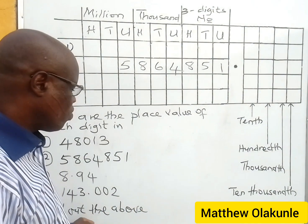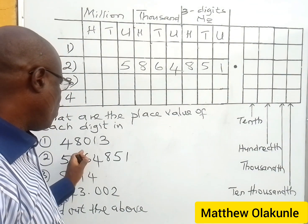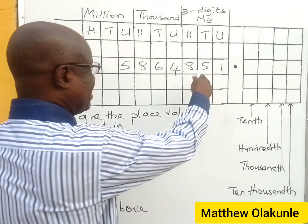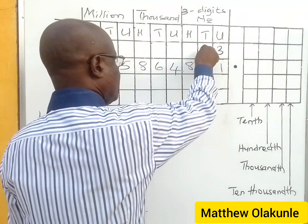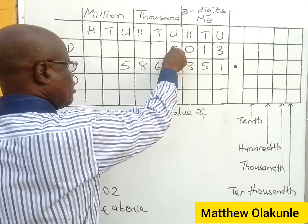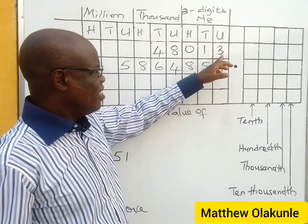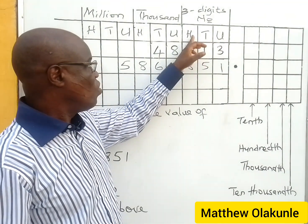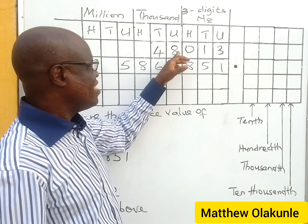The second part of the question is that you should read out the numbers. The first one is 48,013. You start from the back, from the rear. You write your three here — this is a whole number — then followed by one, followed by zero, followed by eight, followed by four. So three has the value of units, one has the value of tens, zero has the value of hundreds, eight has the value of thousands — that's eight thousand.